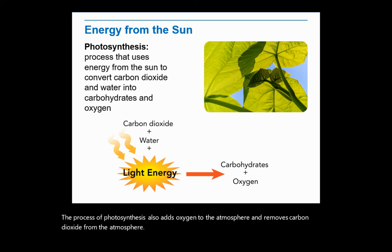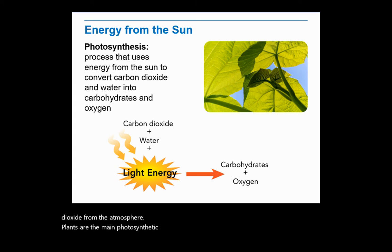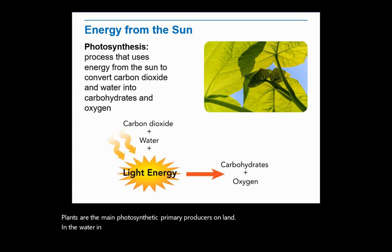Plants are the main photosynthetic primary producers on land. In the water, in freshwater ecosystems especially, algae are the primary producers — the main photosynthetic primary producers.